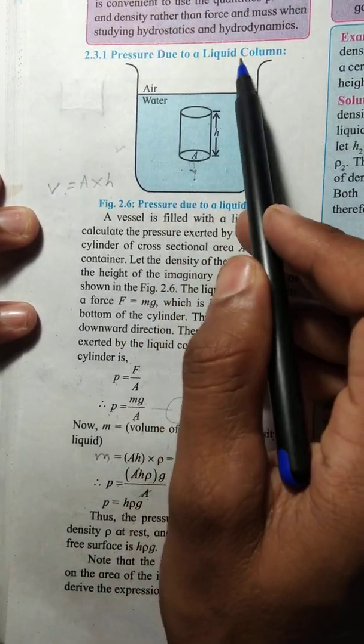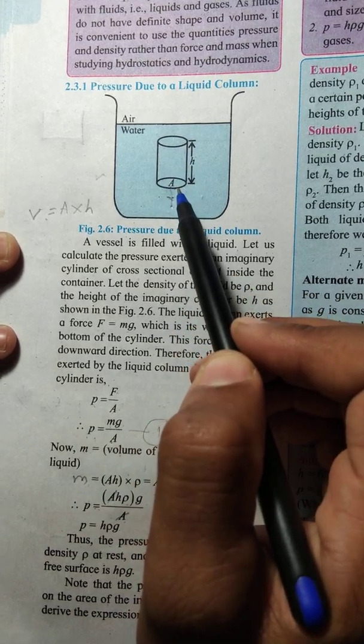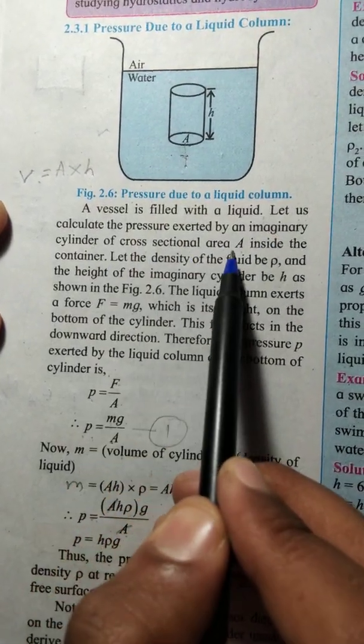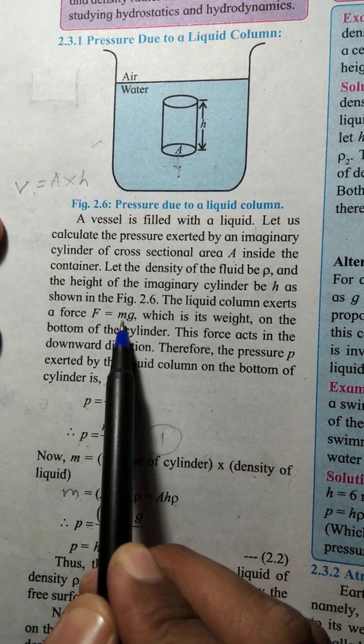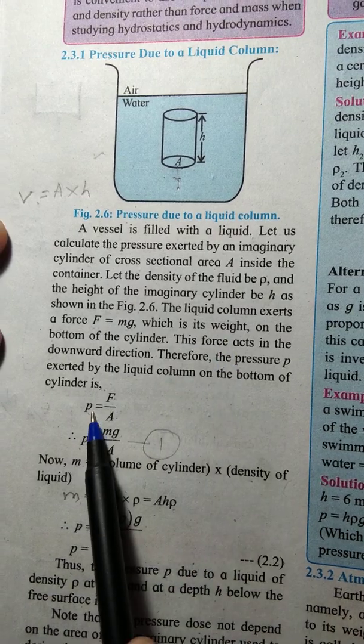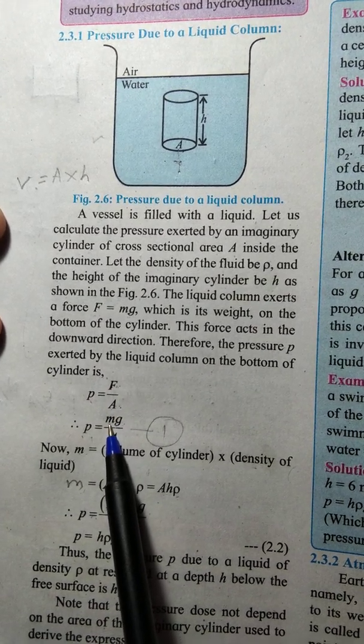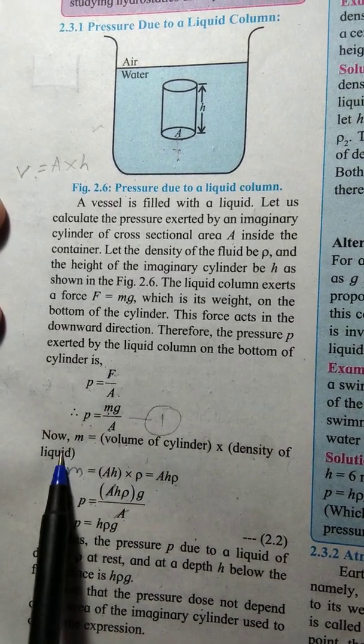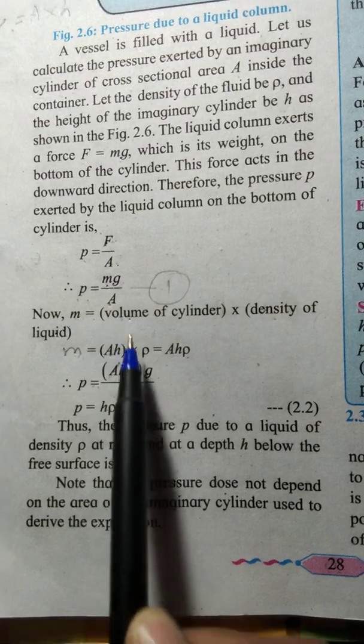Next point is pressure due to liquid column. We have a vessel filled with water. There is an imaginary liquid cylinder having cross section area A and height H which is inside the container. Force F equals Mg, which is acting downward - that is its weight. To find pressure, we use the formula P equals F upon A. Force is Mg. Mass formula is volume into density. Mass equals volume, which is area into H, times density rho.